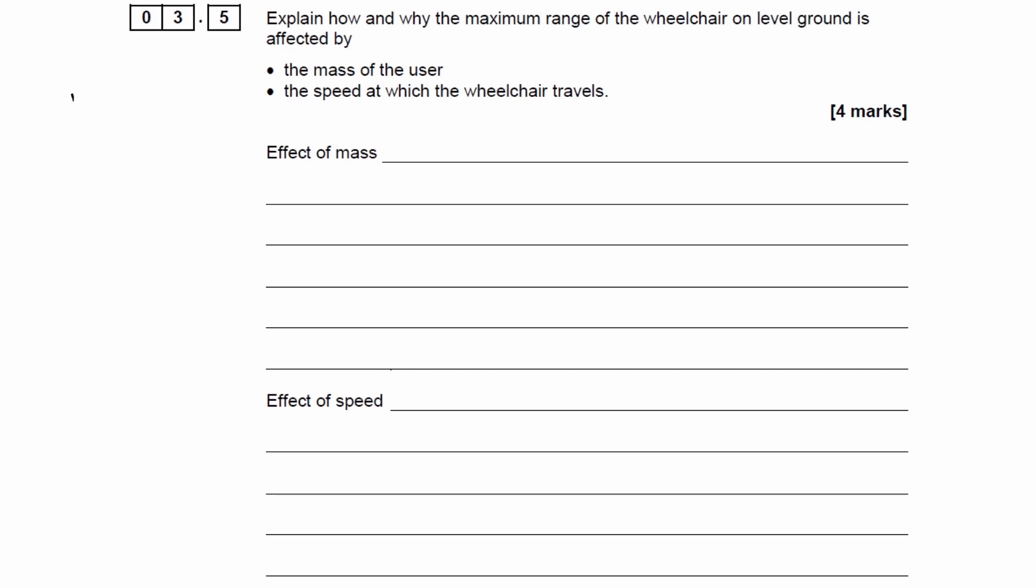Let's think about this equation: work done equals force times distance. F represents the total resistive force, which is the same as the driving force, because the forward forces equal the backwards forces as we're traveling at constant speed throughout the journey.